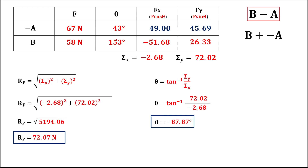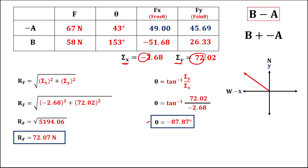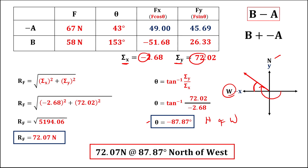To find the direction: the x-component is negative and the y-component is positive, so the resultant force lies in the west-north quadrant. Since theta is negative, that is clockwise, so the direction is north of west. The final answer is 72.07 newtons at 87.87 degrees north of west.